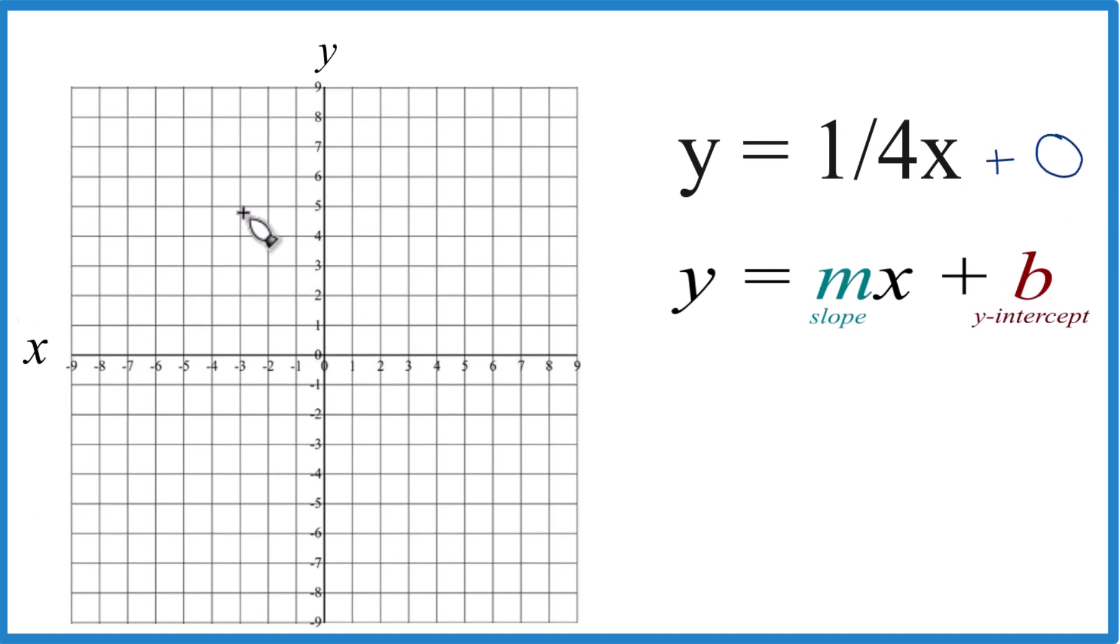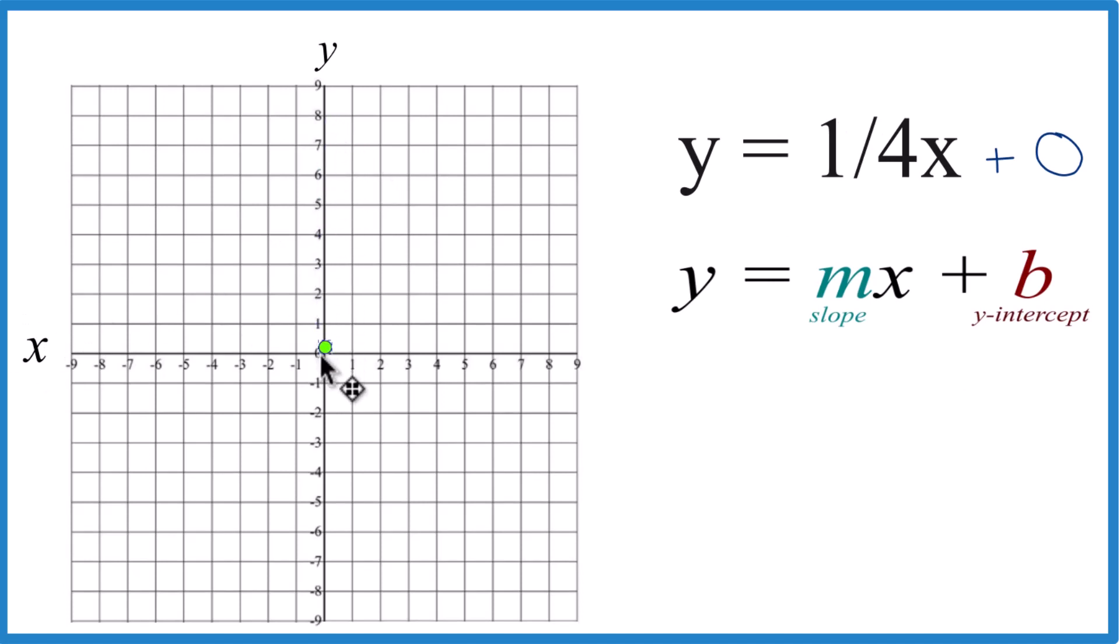So we have our y-intercept at zero on the y-axis. Boom, there it is, right there. For the slope m, that's 1 fourth, and that's kind of nice because you can think of that as rise over run.